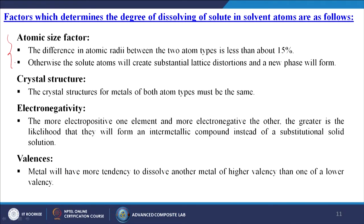Factors determining the degree of dissolving of solute in solvent include: atomic size factor — the difference in atomic radii between the two atom types must be less than about 15%, otherwise the solute creates substantial lattice distortions and a new phase forms (valid for substitutional impurity). Crystal structure must be the same for both atom types. Electronegativity — more electropositive one element and more electronegative the other increases likelihood of forming an intermetallic compound. Valence — metals have more tendency to dissolve another metal of higher valency than lower valency.